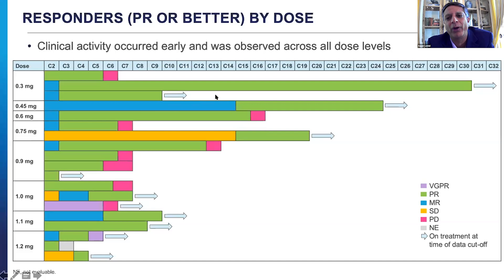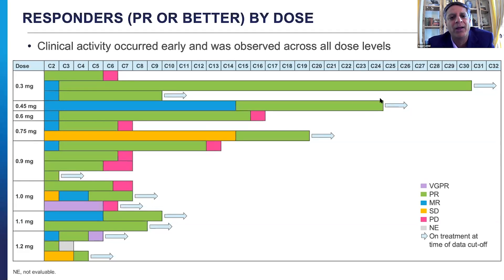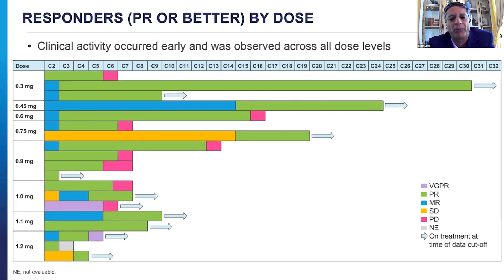Looking at depth and duration of response, one patient in green — one of my own patients at the lowest dose — was among the first responders on this trial and has now been in continuous partial response for almost three years, tolerating the drug very well with reduced dexamethasone. As the dose increases, depth of response starts to increase. This is an early snapshot and more data will be coming at ASH and ASCO very soon.